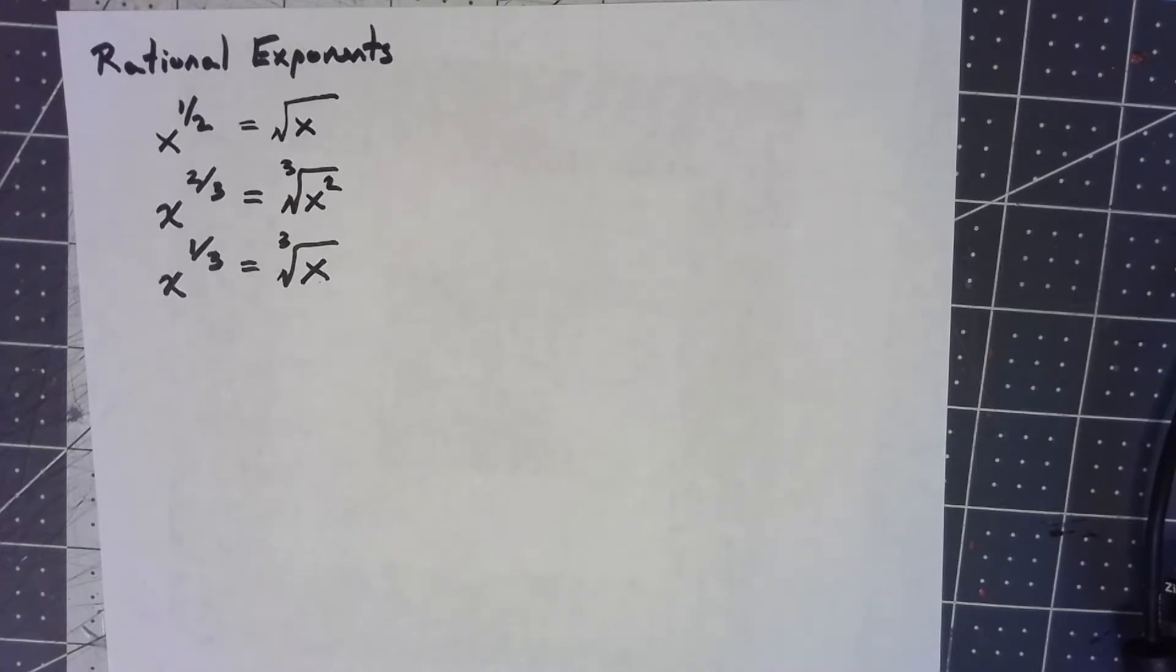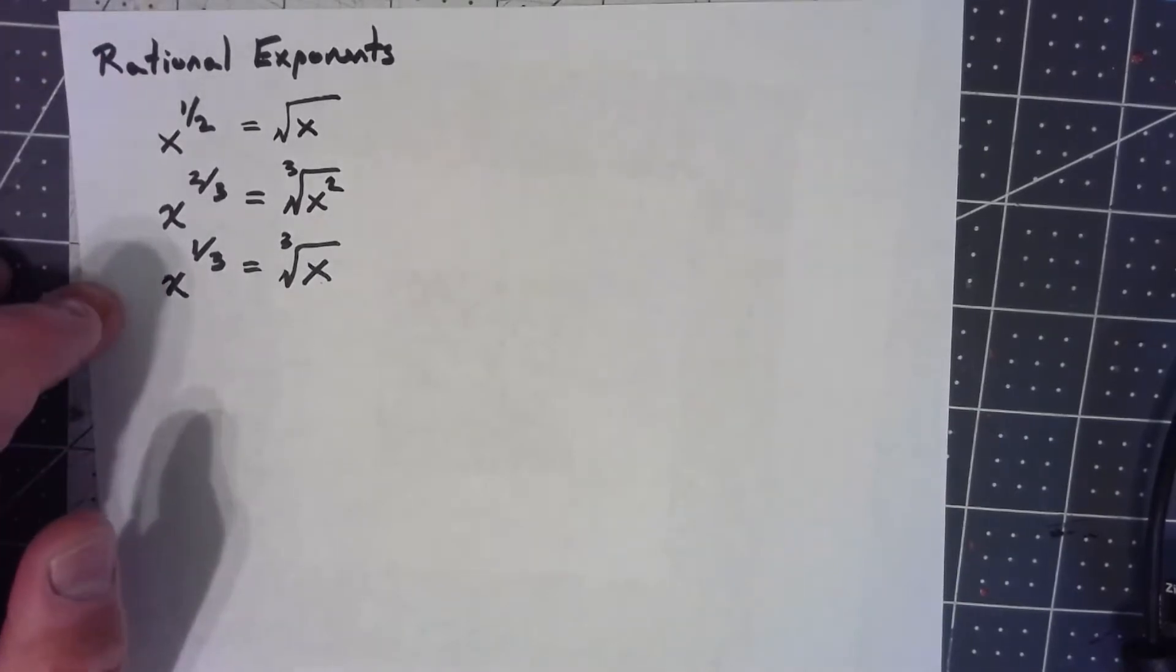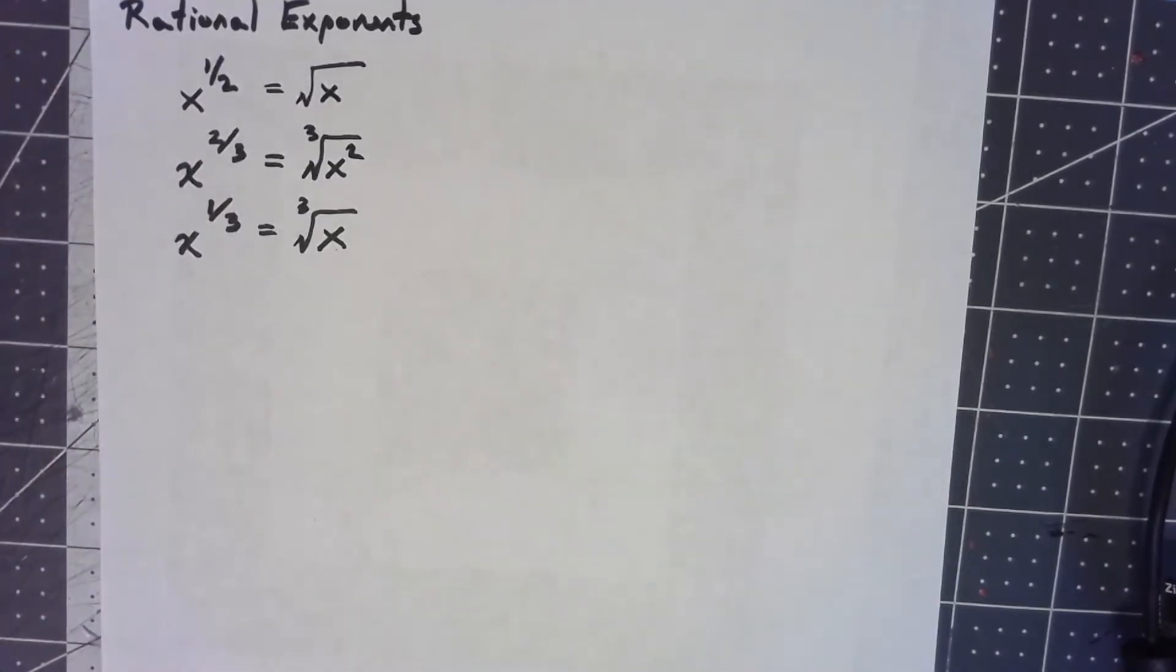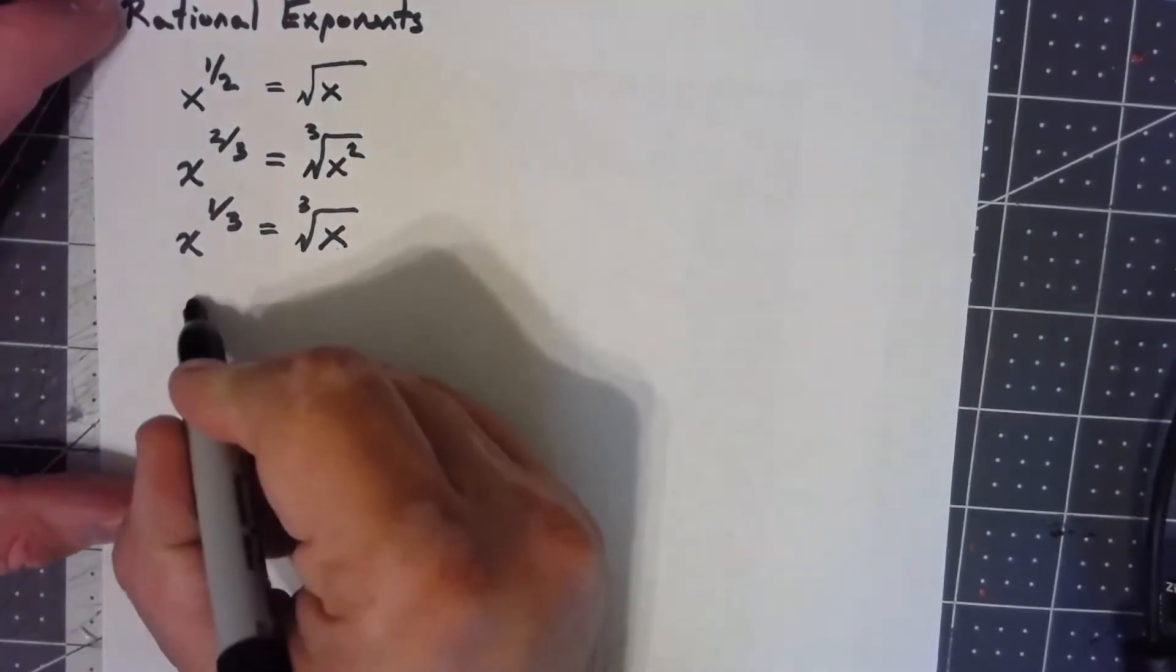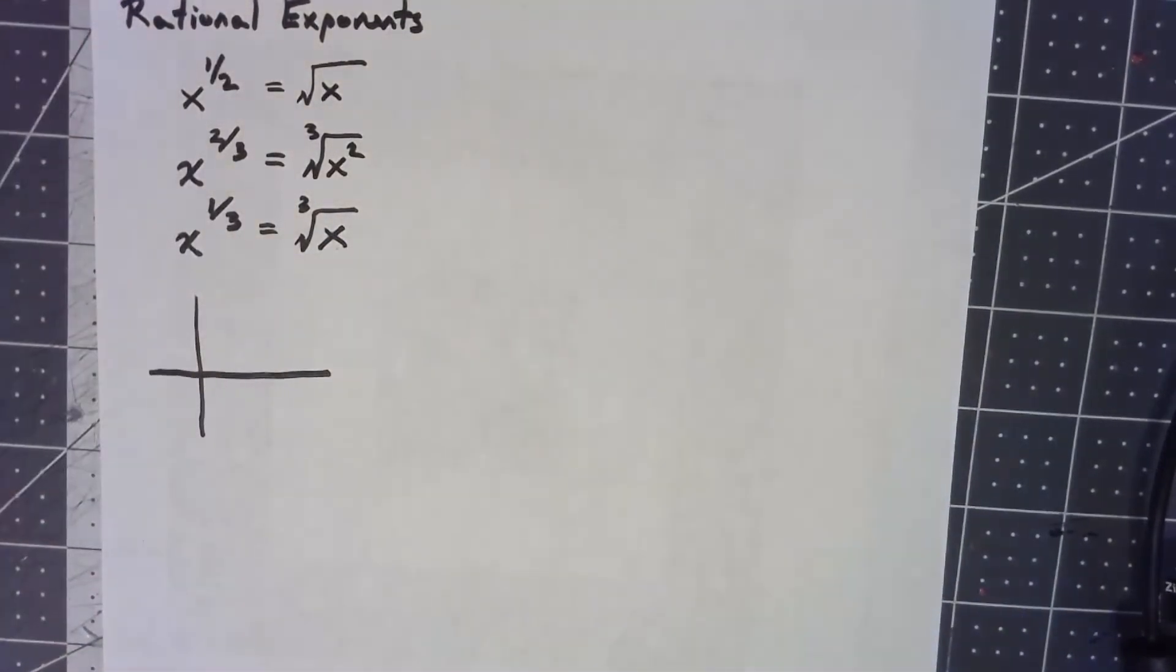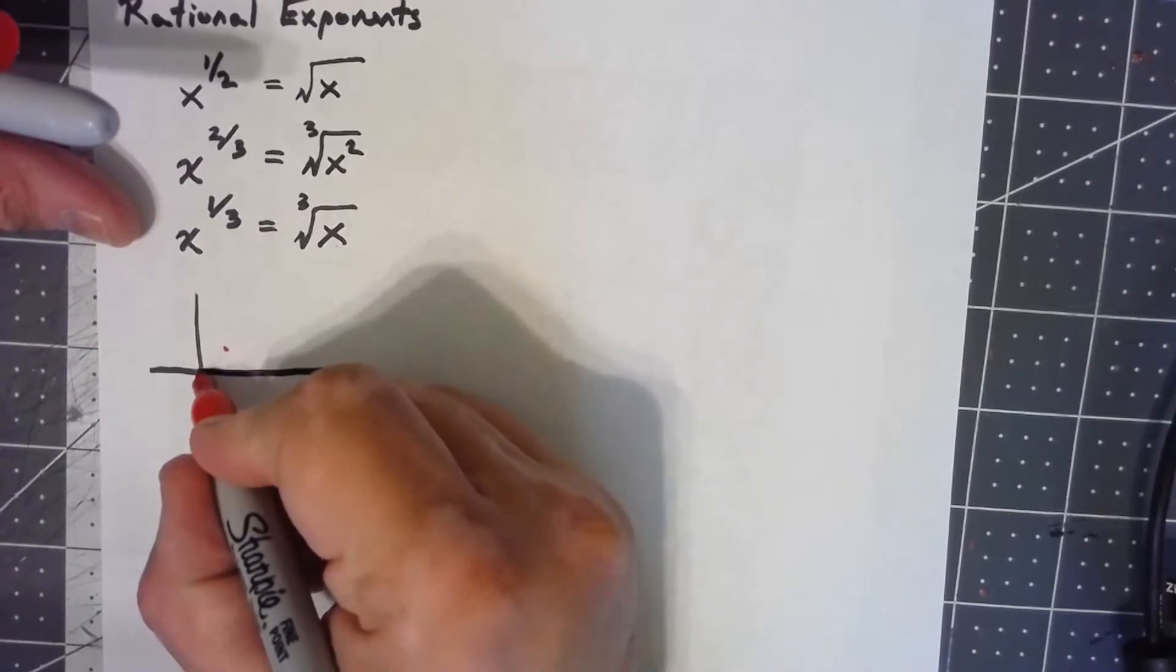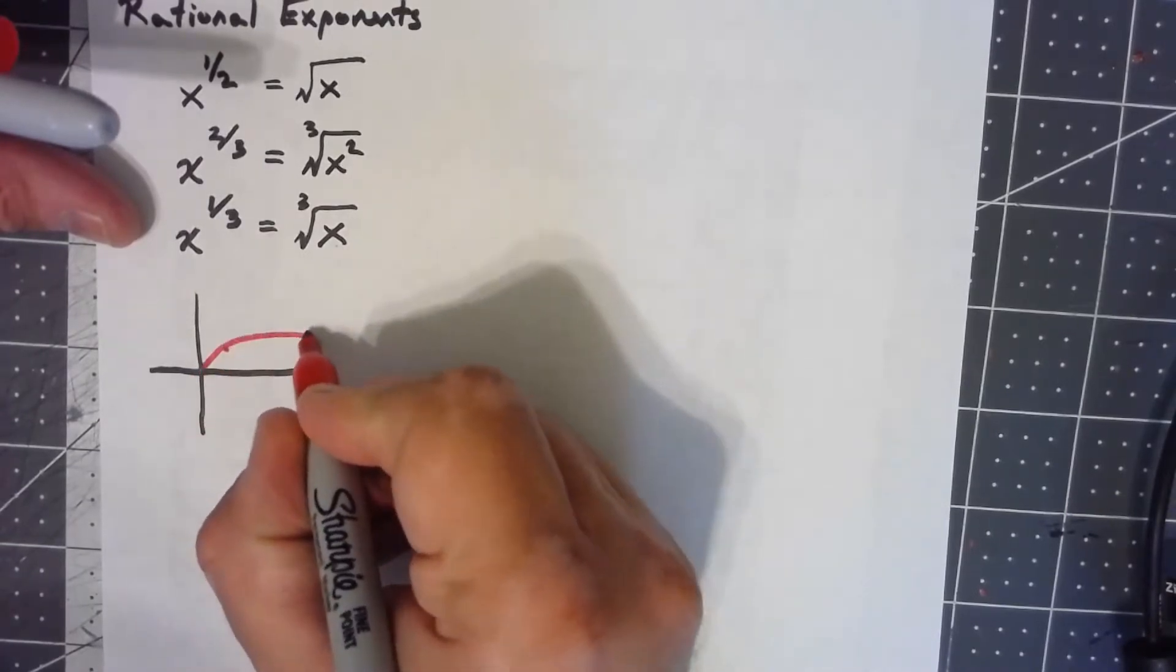Now let's take this a step further and think about what the graphs of these things look like. The first one and the third one here, we know what those graphs look like. x to the 1/2 starts at (0,0), goes up, and flattens out as it goes.